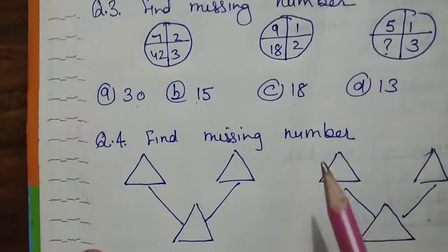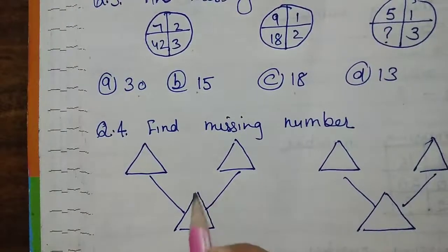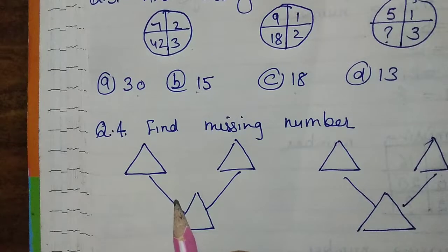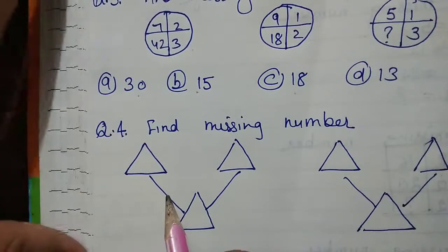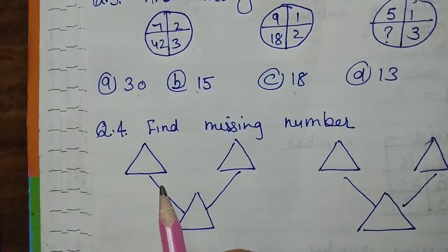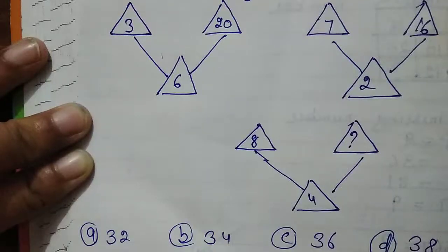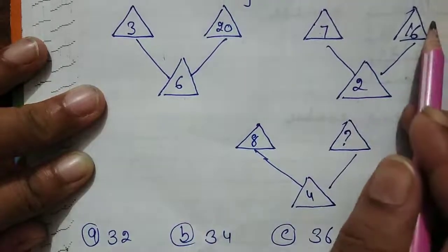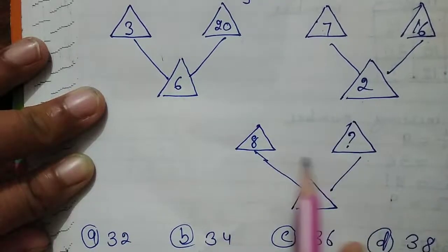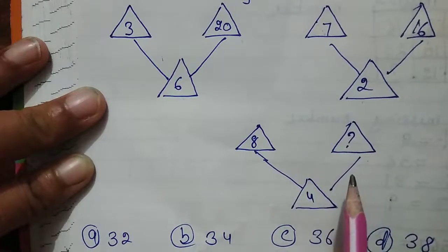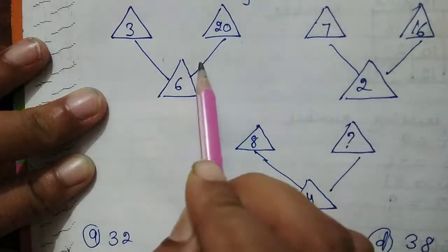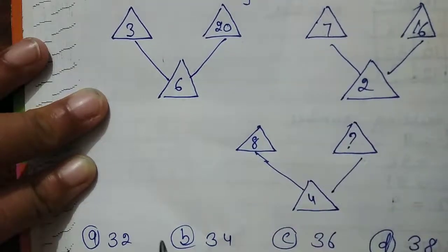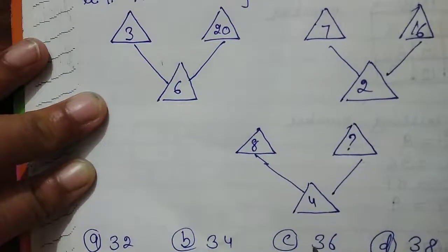Now come to the fourth question of the homework. Some triangles are given to you and you have to find the missing number. The first triangle has 3 and 26. The second figure has 7, 2, and 16. In the third case, 8 and 4 are given. Follow the same process: find the relation, check whether the pattern follows in the second, and find the missing number in the third. The given options are 32, 34, 36, and 38.